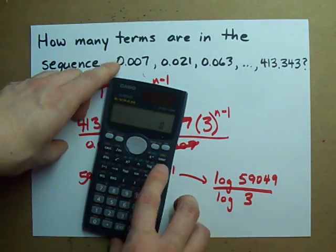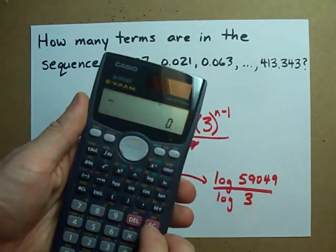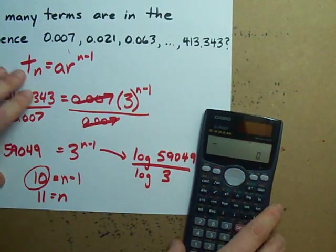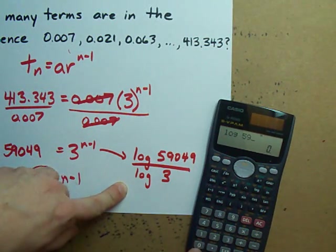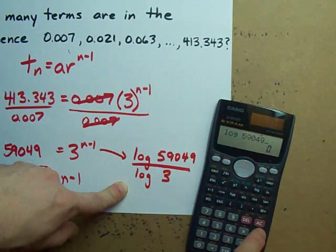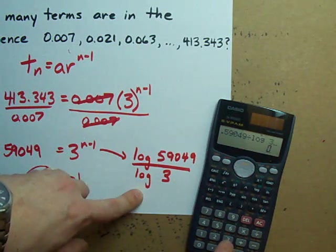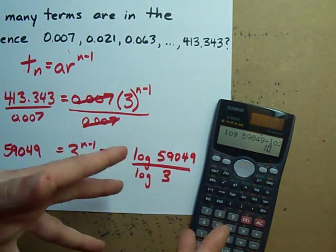Divide it by the log of whatever number is being raised to that exponent. Check it out. If I do this on my calculator, you can see what's going on. Log of 59049 divided by the log of 3. Oh, 10.